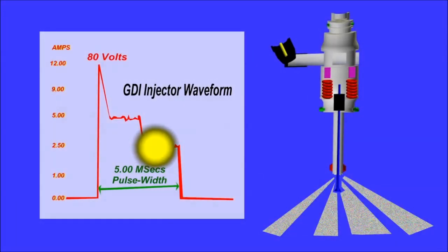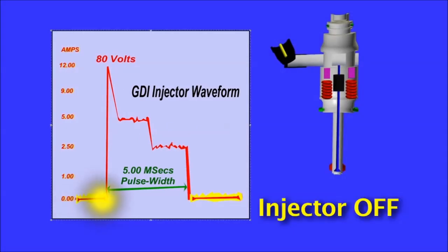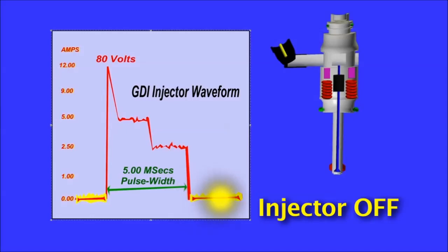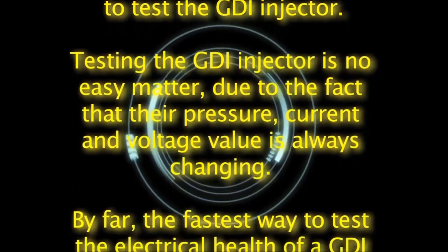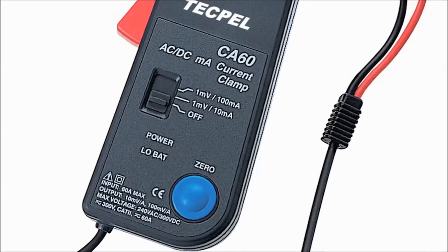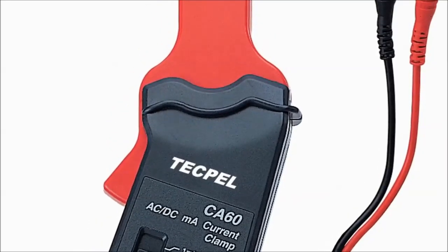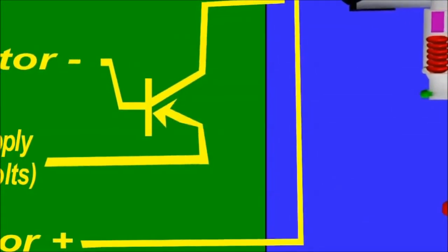Three is the second stage in the hold current, which is set at about 2.5 amps. Not all GDI systems have this second hold stage, but if so it is there to keep the injector open and further protect it from heat damage. If available, the second hold stage is employed when injector opening reaches values above 3.5 milliseconds. By far, the fastest way to test the electrical health of a GDI injector is using a clamp-on amp probe. By clamping around either of the injector wires, you can get a clear reading of the current waveform, then compare the readings to the analysis done before.